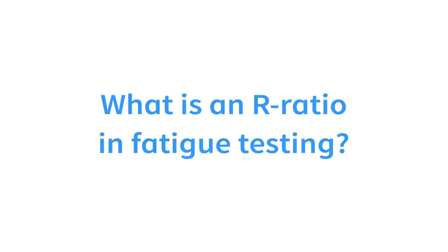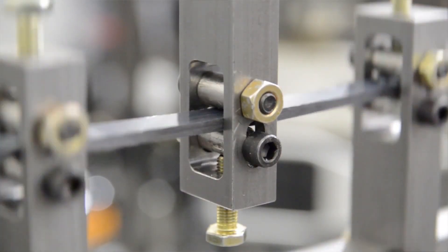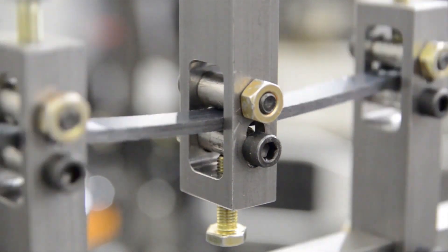What is an R ratio in fatigue testing? Simply put, the R ratio is representative of the loading profile for a given test. An R value of negative one and an R value of zero are two common reference test conditions used for obtaining fatigue properties. An R value of negative one is a fully reversed loading condition where the specimen is cycled to the same stress in tension and compression. An R value of zero is a tensile fatigue test where a specimen is cycled from maximum tensile stress to zero stress repeatedly.